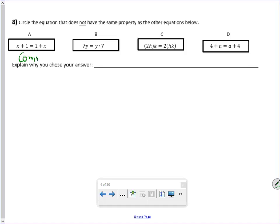Circle the equation that does not have the same properties as the other properties below. Well, this is commutative. This is commutative. And this is commutative. I'll spell it all the way out. And what that says is that when we multiply two numbers or we add two numbers, the order doesn't matter. In this one, the order didn't change. The parentheses did. So that's the associative property. And I just explained my answer, so we'll move forward.